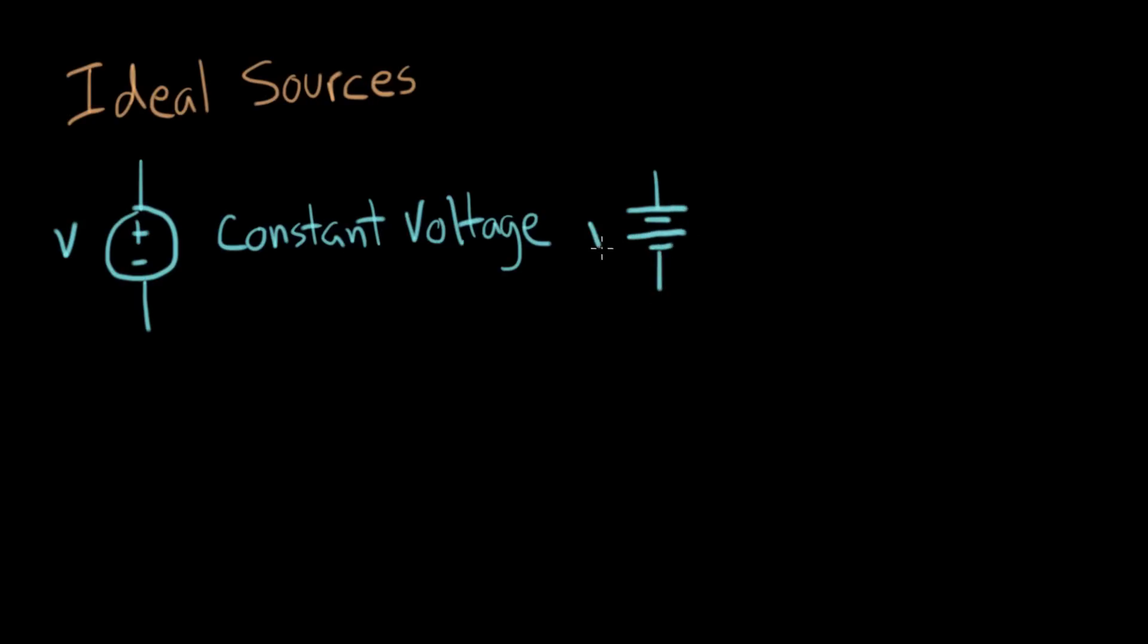We also label it V. The convention for the polarity of a battery symbol is the long line is the plus terminal, and the short line is the minus terminal. That's the convention for a battery.